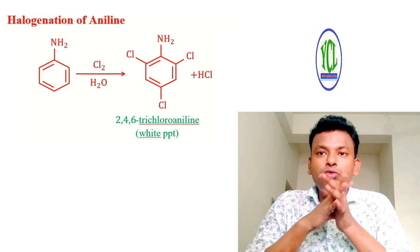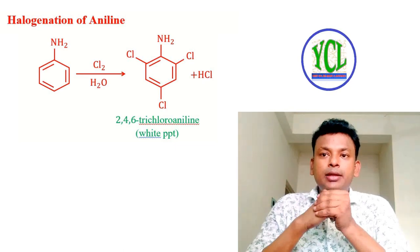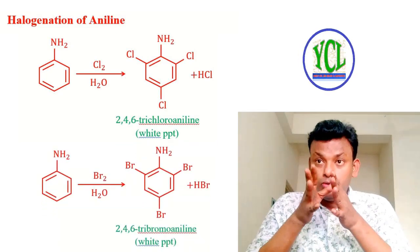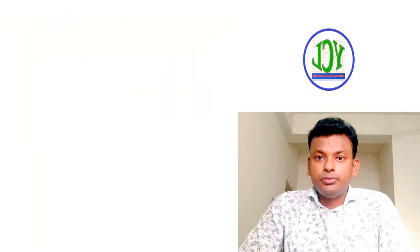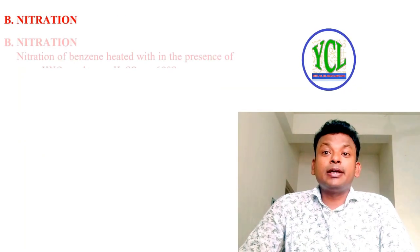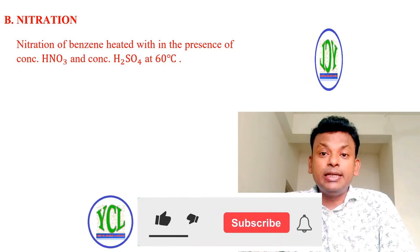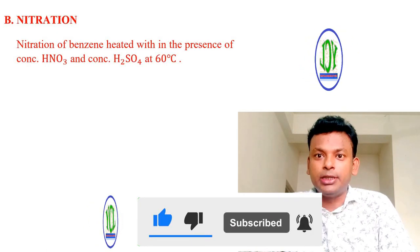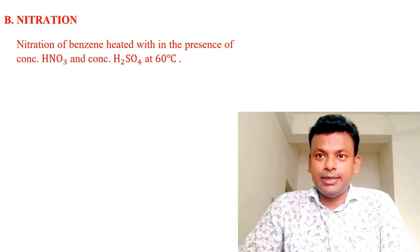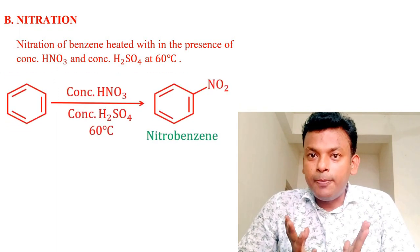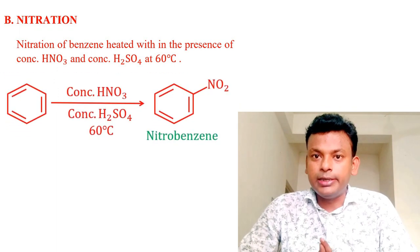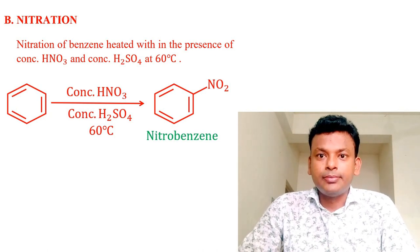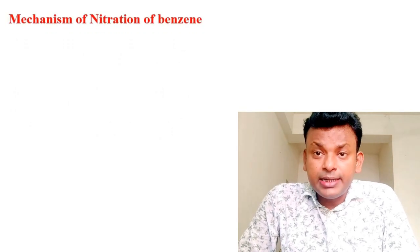Halogenation of aniline: NH₂ group with Cl₂/H₂O forms 2,4,6-trichloroaniline as a white precipitate — same as bromination giving 2,4,6-tribromoaniline. Nitration of benzene: benzene is heated in the presence of mixed acid — concentrated HNO₃ and concentrated H₂SO₄ — at 60°C to form nitrobenzene.